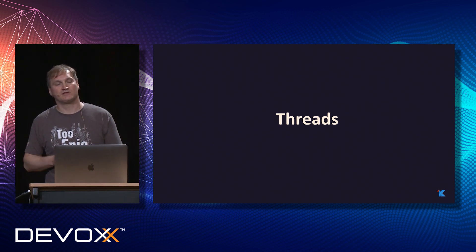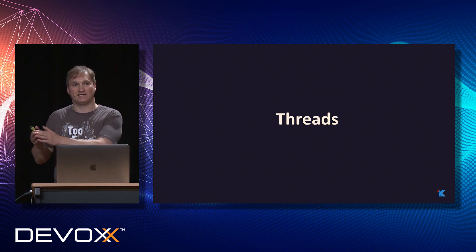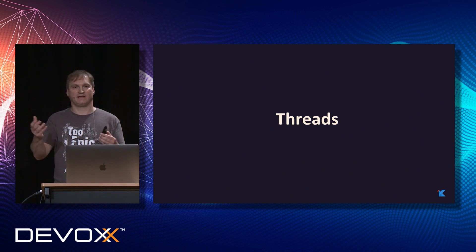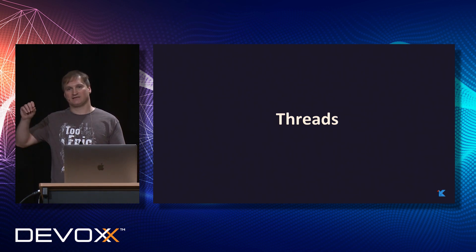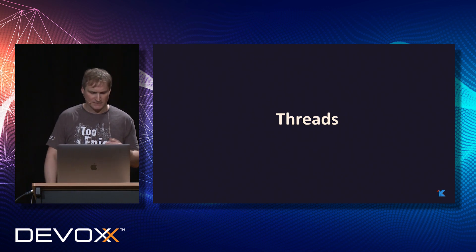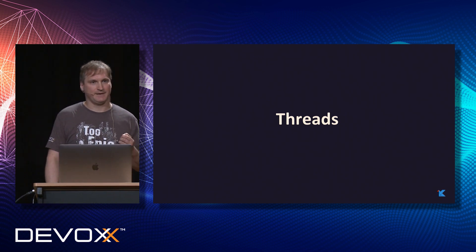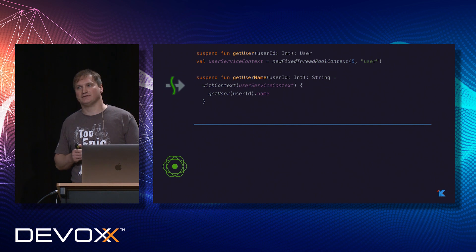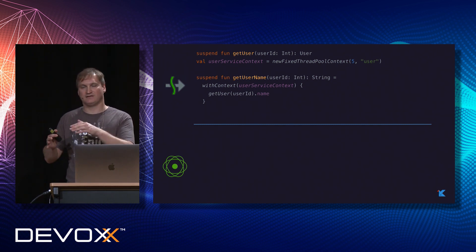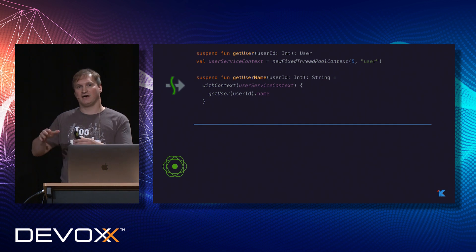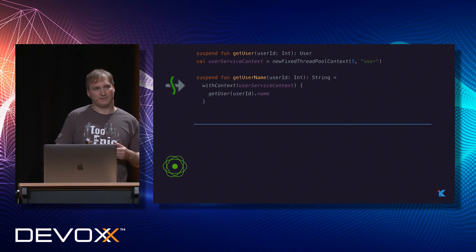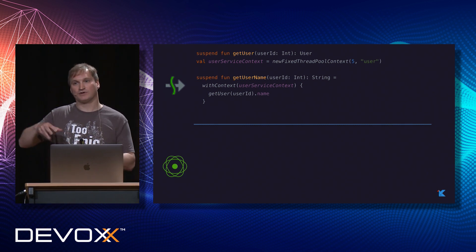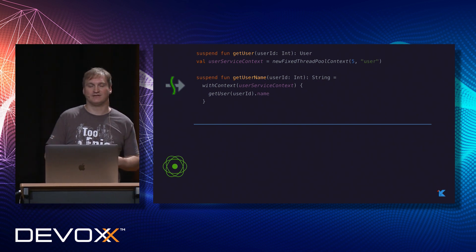Asynchronous code typically uses different threads of execution. How can we specify which threads we want for particular operations? With coroutines, there is a concept of coroutine context. The coroutine context can define many things about how a coroutine is executed. One special type is the coroutine dispatcher, which defines what threads are used for executing a coroutine.